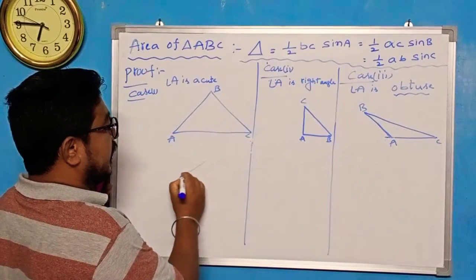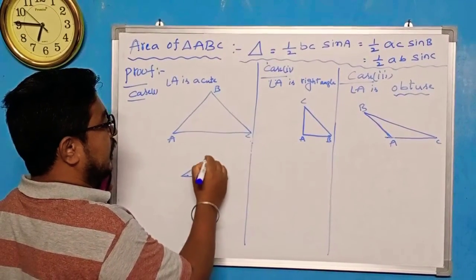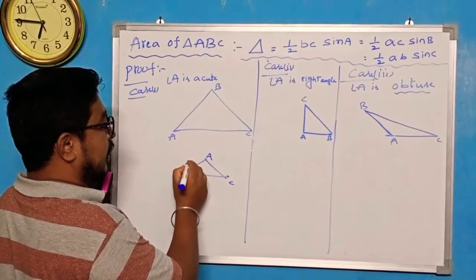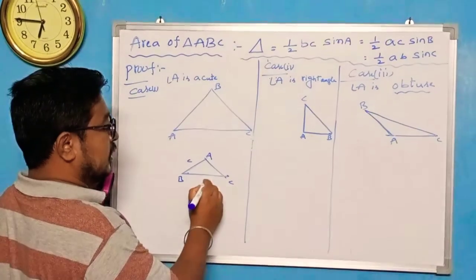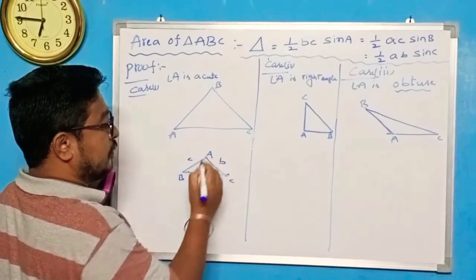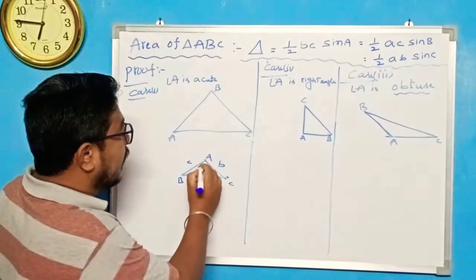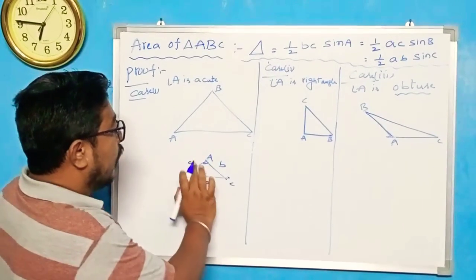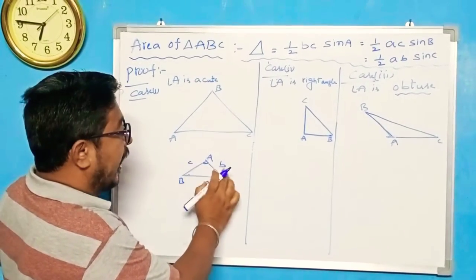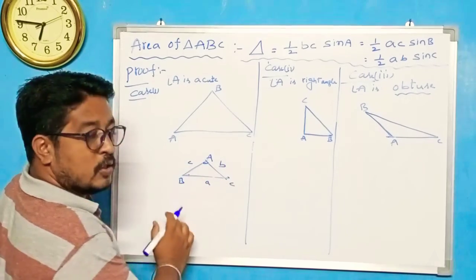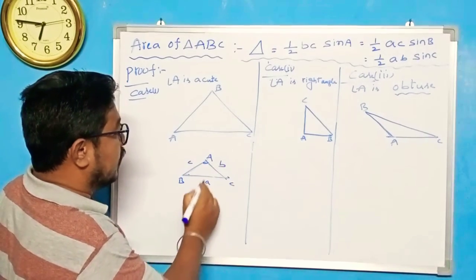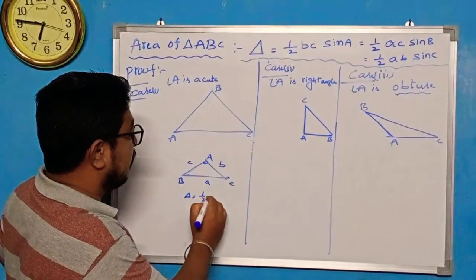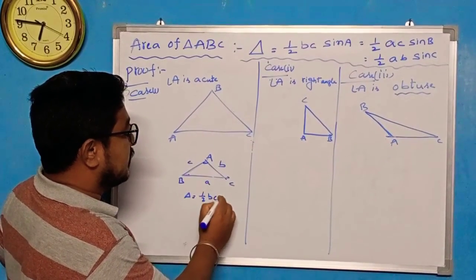Suppose you are taking a right angle in triangle ABC. AB notation is C, BC notation is A, AC notation is B. Suppose the included angle is A. The remaining two sides are BC. So area of triangle, according to included angle A, is half BC sin A.